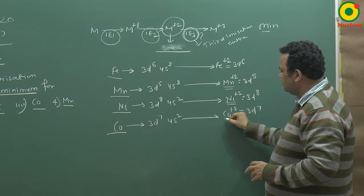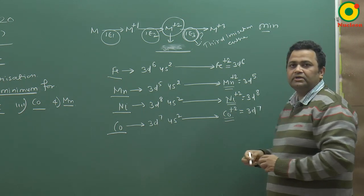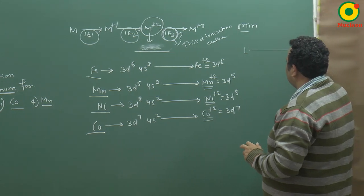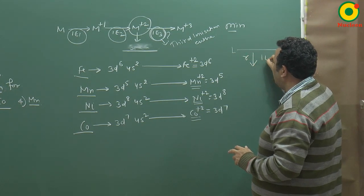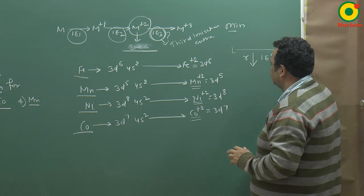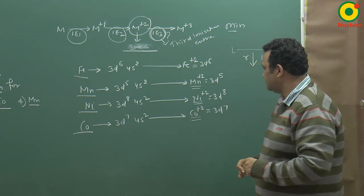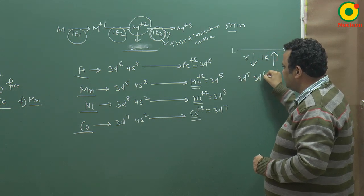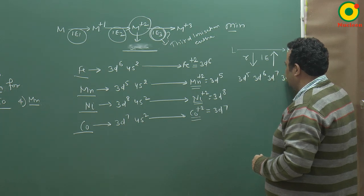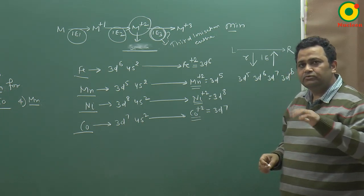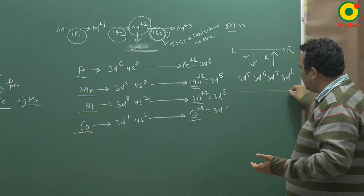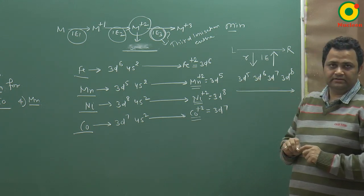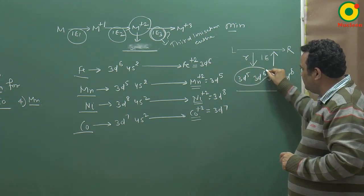nickel plus 2 is 3d8, and cobalt plus 2 is 3d7. When I compare them both, the minimum should be for this.